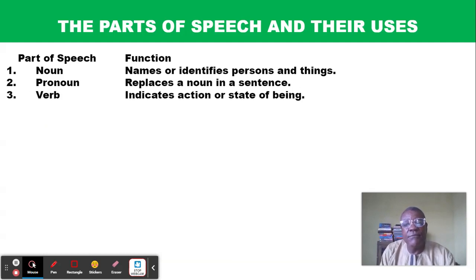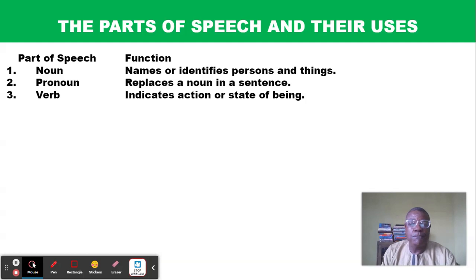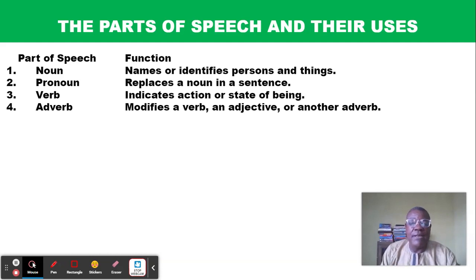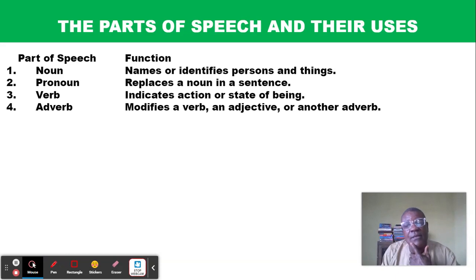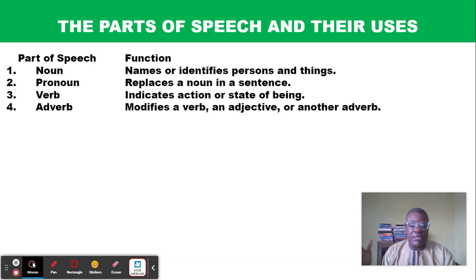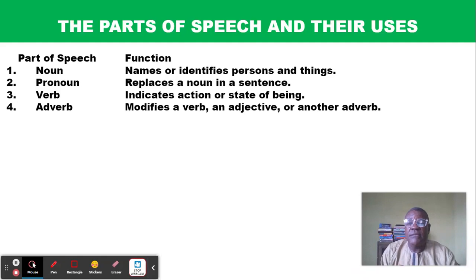Number three: verb. The verb indicates action or state of being. Number four: adverb. An adverb modifies a verb — to modify is to describe — so an adverb modifies or describes a verb, an adjective, or another adverb. You can look for a video that already explains the parts of speech in greater detail.